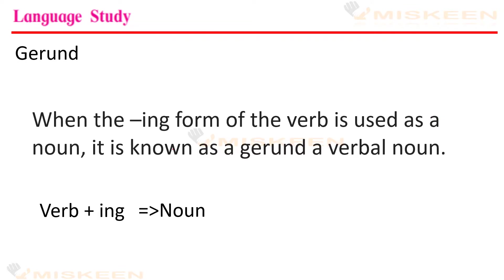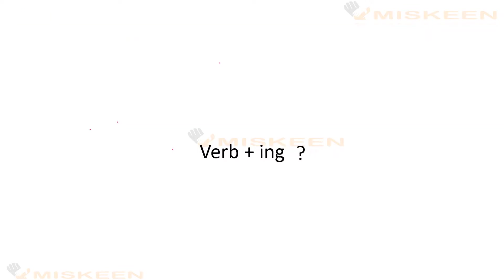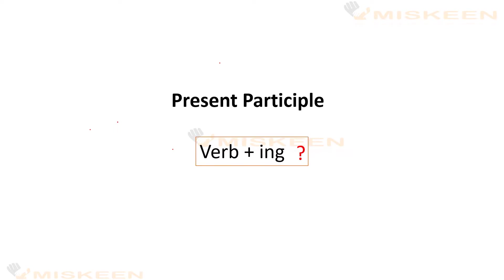Is definition ke mutabik, verb meh jab ing legaaya jatahe, tab woh noun ki tarah kama karne lagta hai. Verb aur ing ka joh kombination hai, woh gerund ke alawah ek aur chiz hai, aur woh hai present participle.